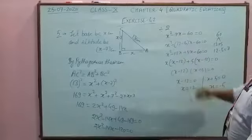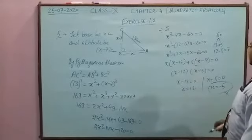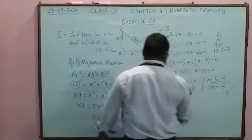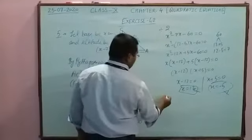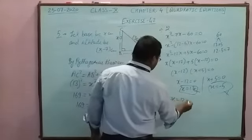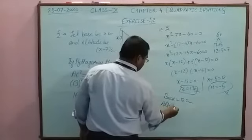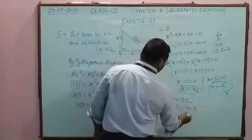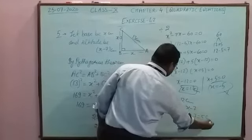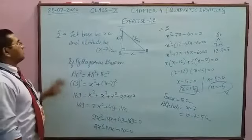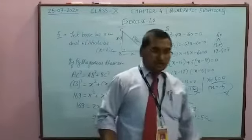Since length cannot be negative, we reject x = −5. So x = 12. The base is 12 cm and the altitude is x − 7 = 12 − 7 = 5 cm. This is question number 5, an important question of exercise 4.2.